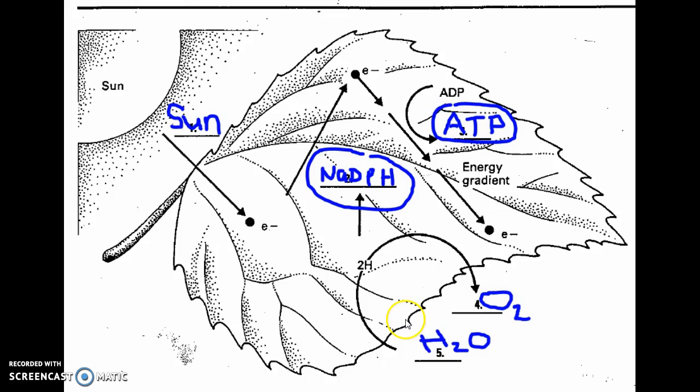So the things that are going to be important are the NADPH and ATP. Those are going to go on to the dark reactions, or the light-independent phase of photosynthesis.